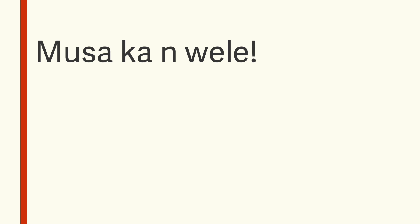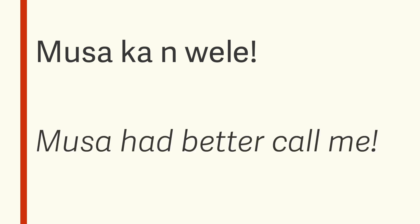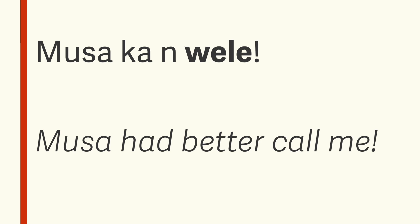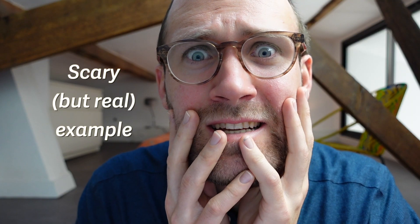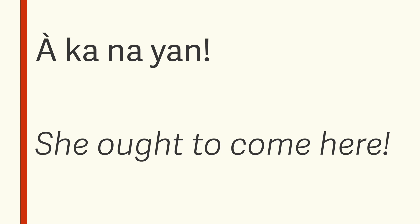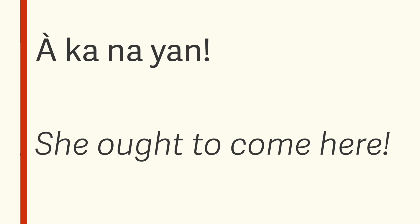In other cases the meaning can be closer to 'had better.' For instance, if you and your friend Musa weren't getting along, you might say 'musa ka un wele,' meaning 'Musa had better call me' — literally: Musa, optative marker, me, call. Another possibility is 'ought to.' If your family were discussing a friend living somewhere affected by climate change, you might say 'a ka na yam,' meaning 'she ought to come here' — literally: she, optative affirmative marker, come, here.